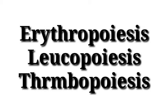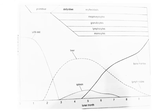We have discussed medullary hematopoiesis — that is, intramedullary and extramedullary hematopoiesis. With respect to blood cell formation, medullary hematopoiesis refers to blood cell production in the bone marrow, and extramedullary hematopoiesis refers to blood cell production outside of the bone marrow.